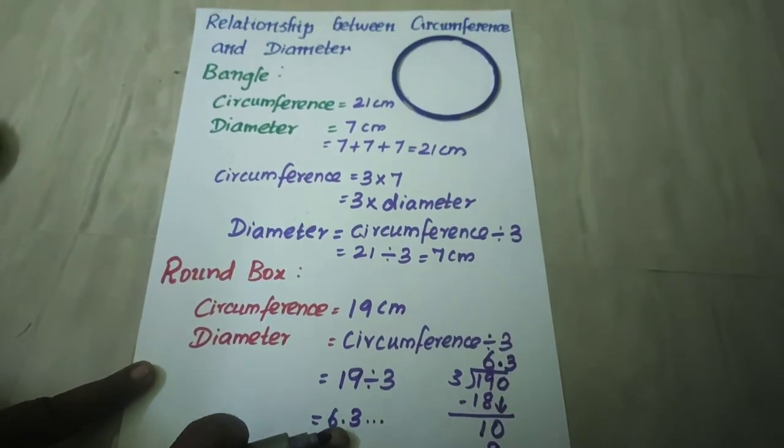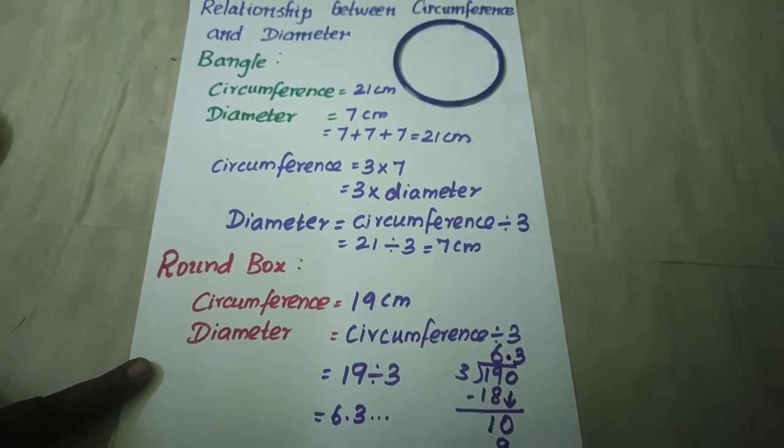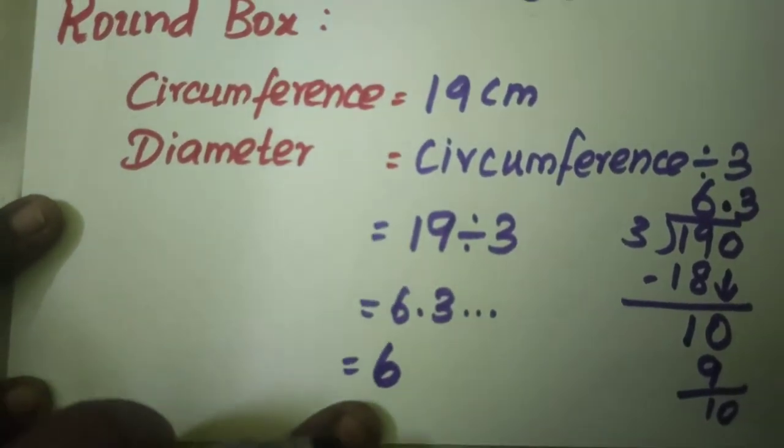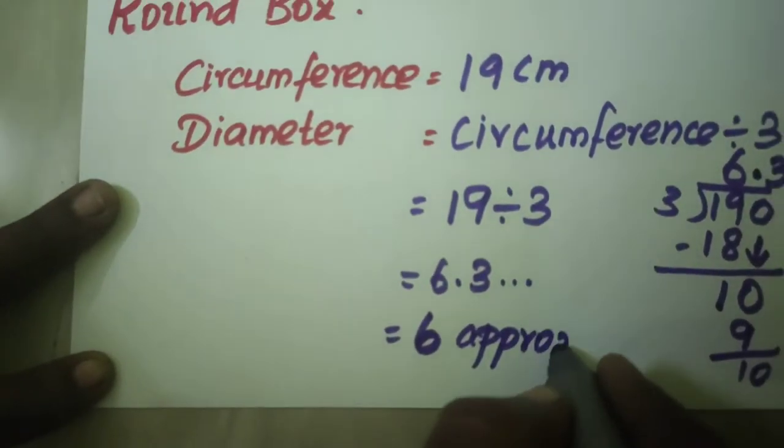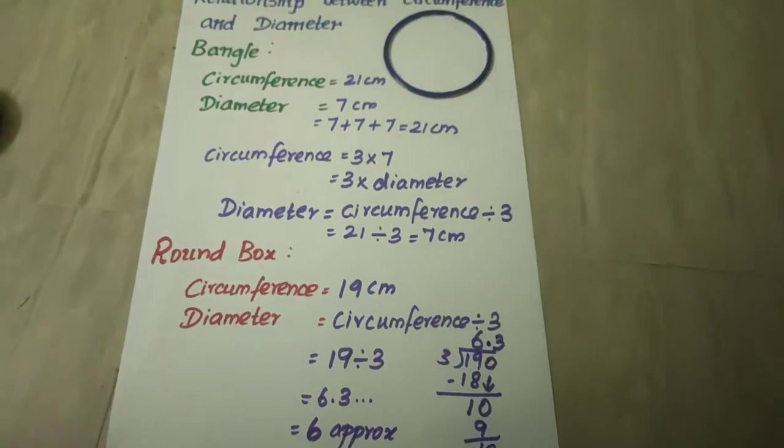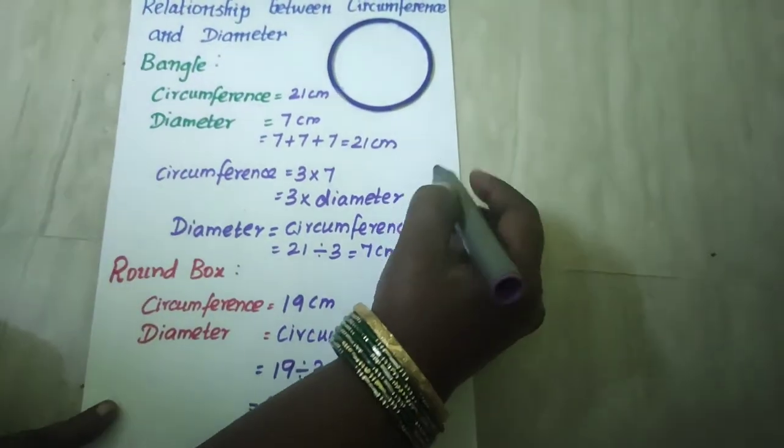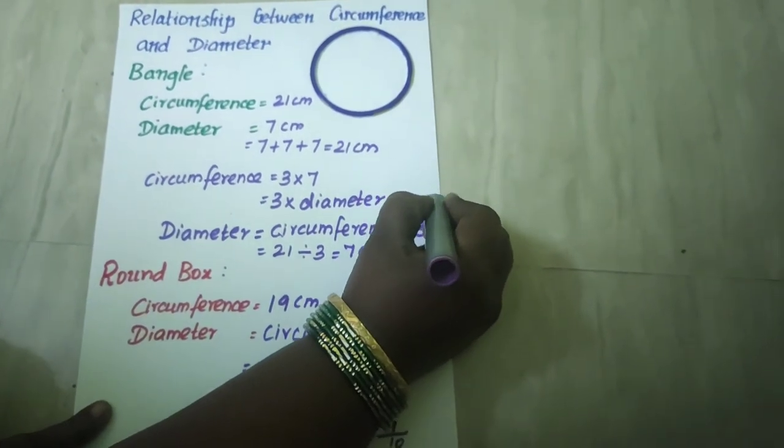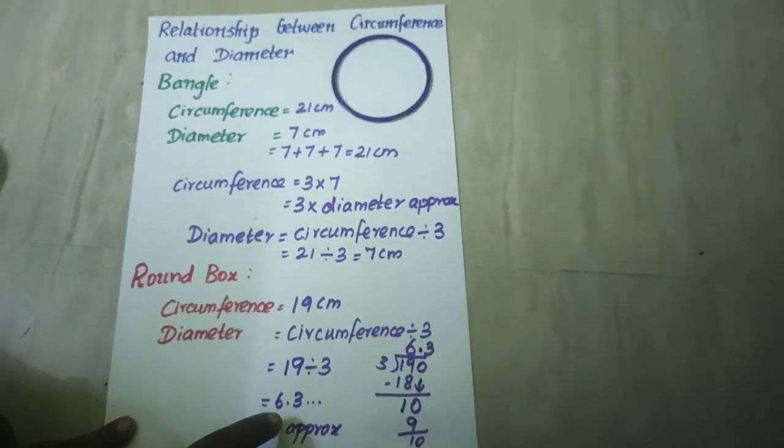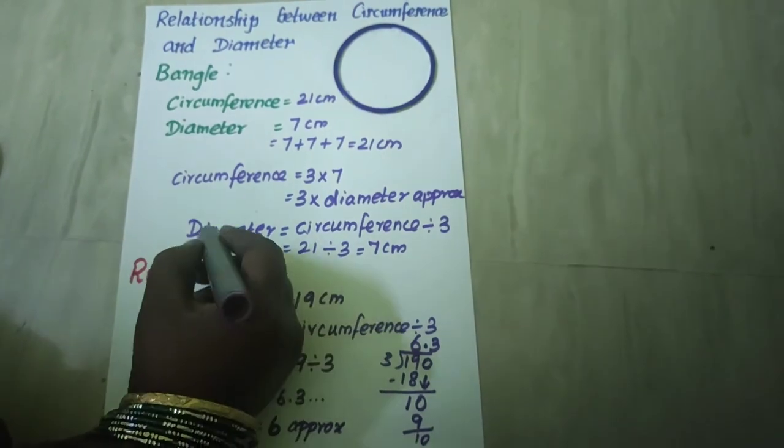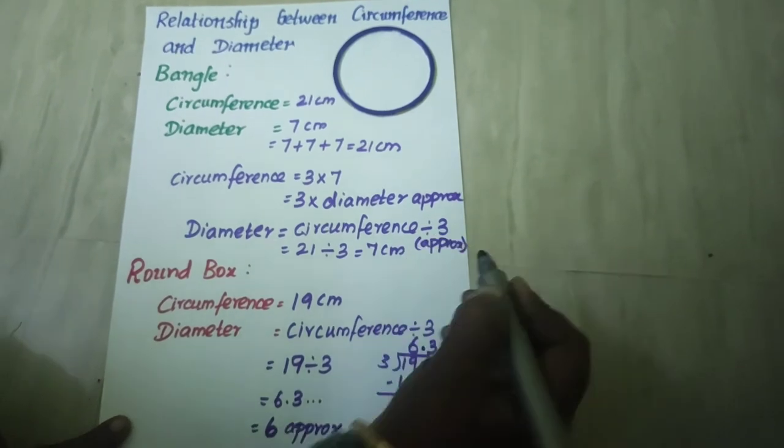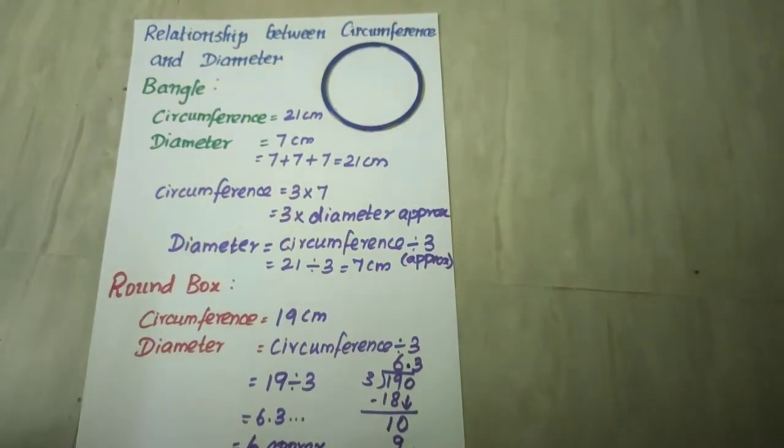So here we can't take the diameter in decimals. So we are taking the value closer to 6. That is you have to take the value 6 approximately. So in this case we are using the word approximately. So when you write the formula, circumference equal to 3 into diameter, it is approximately in some cases. That is if decimal comes, we will not be taking the decimal points. So in that case we will be taking the approximate value. And here also circumference divided by 3 approximately. Understood children.